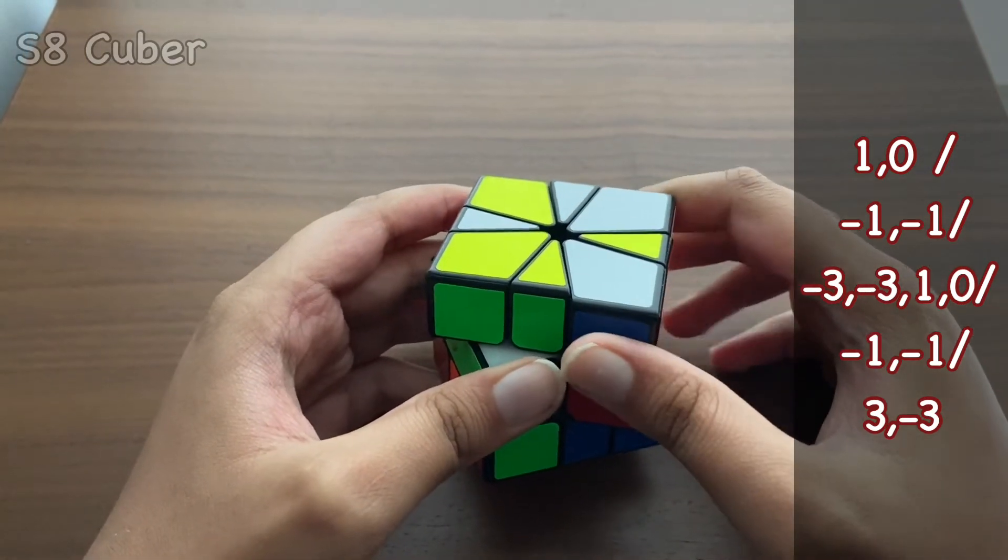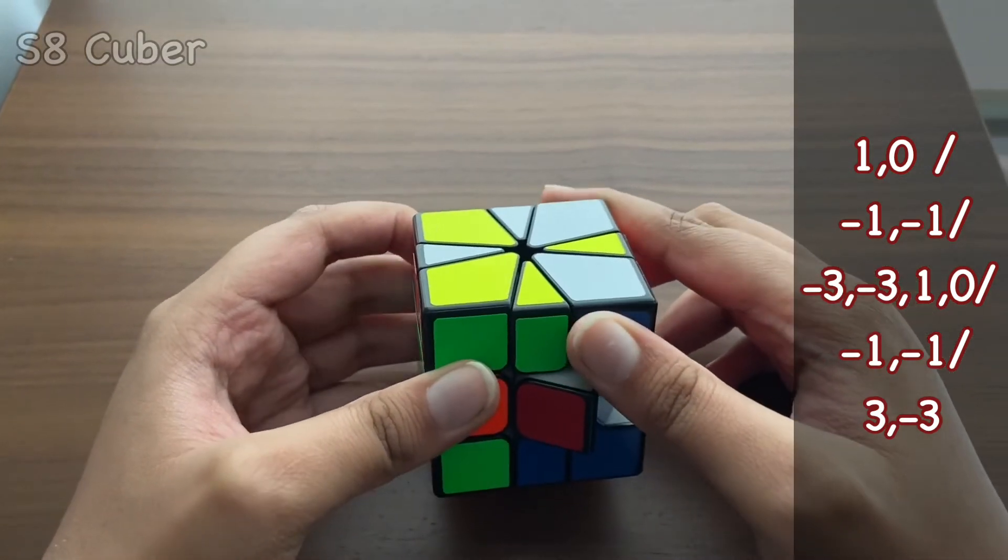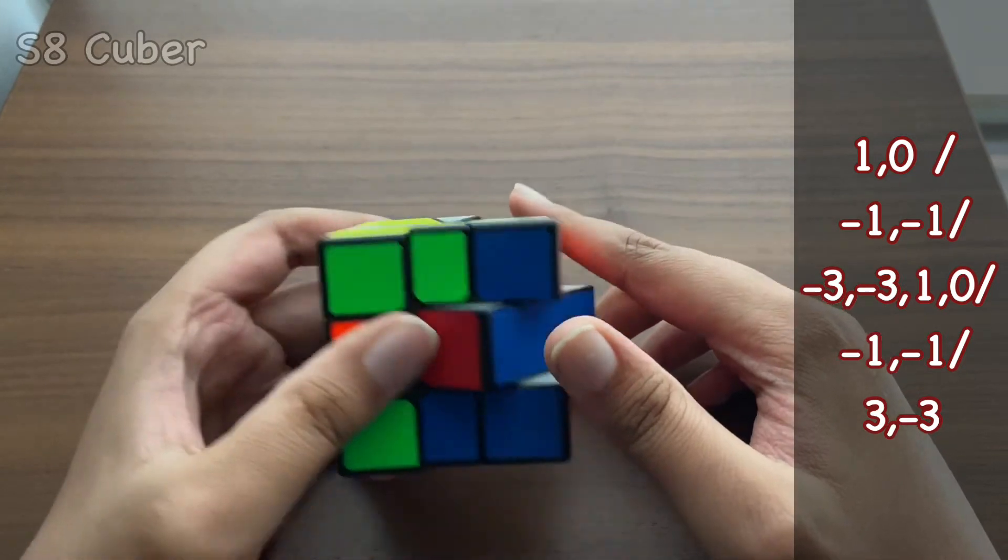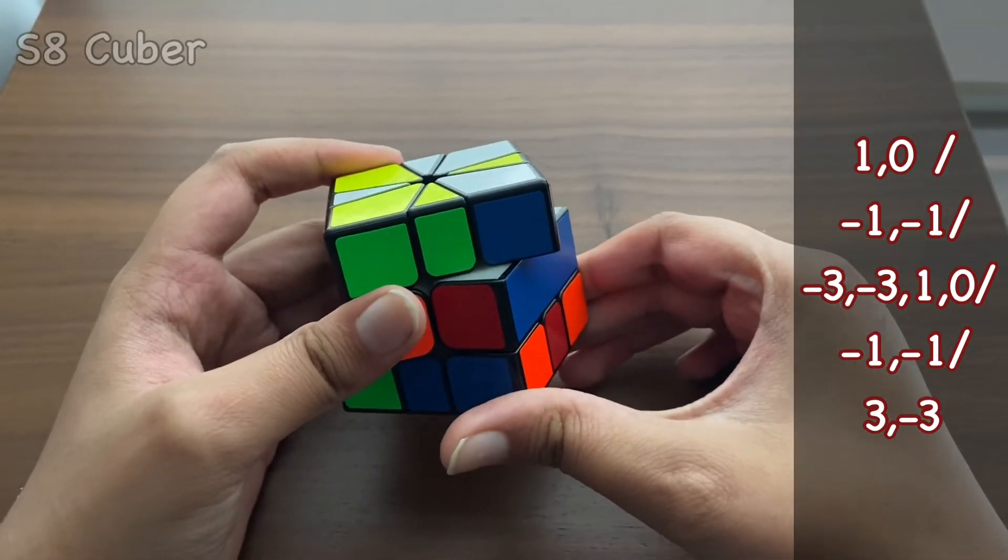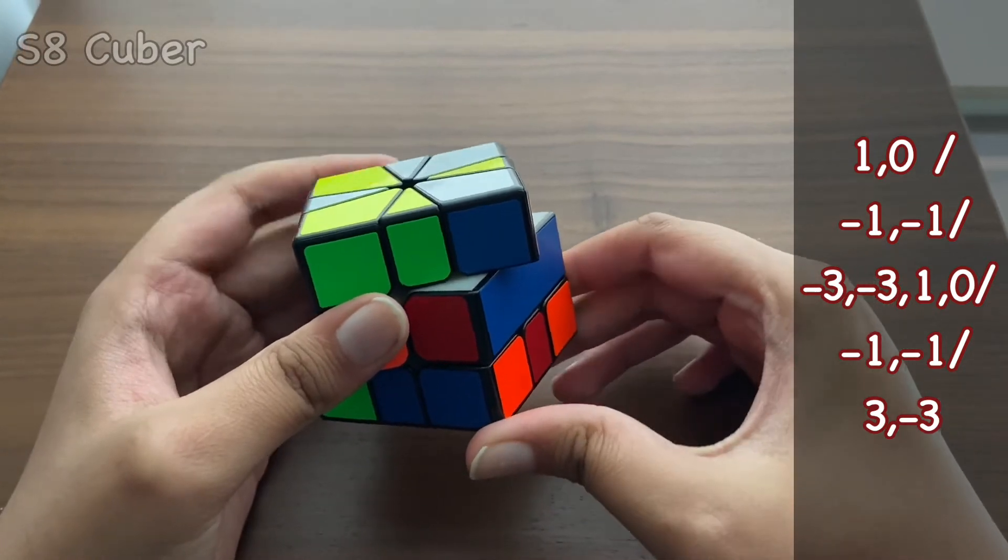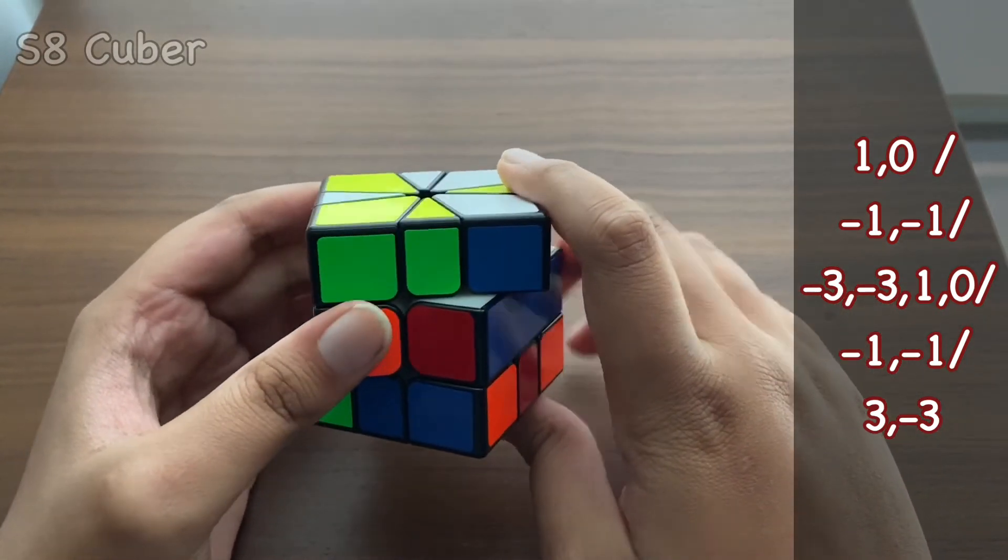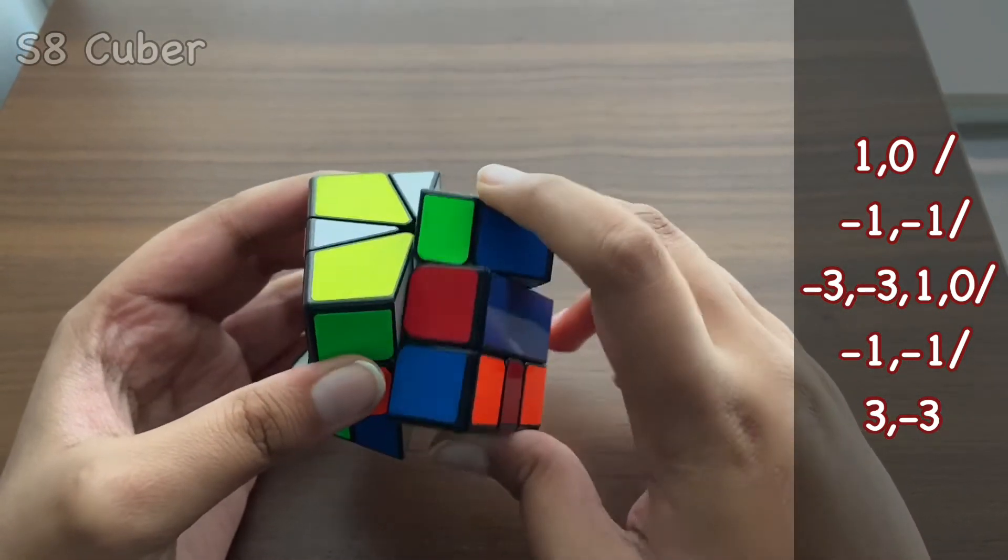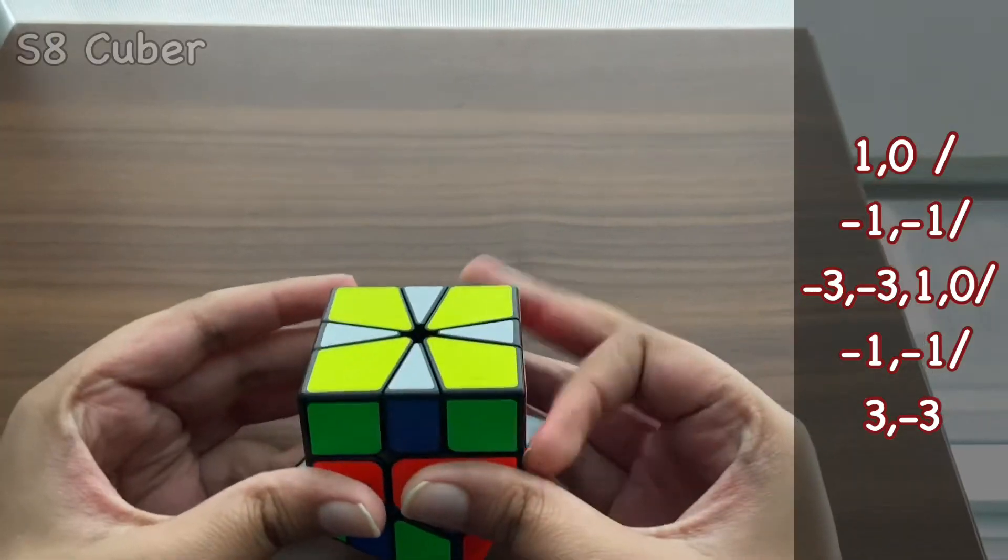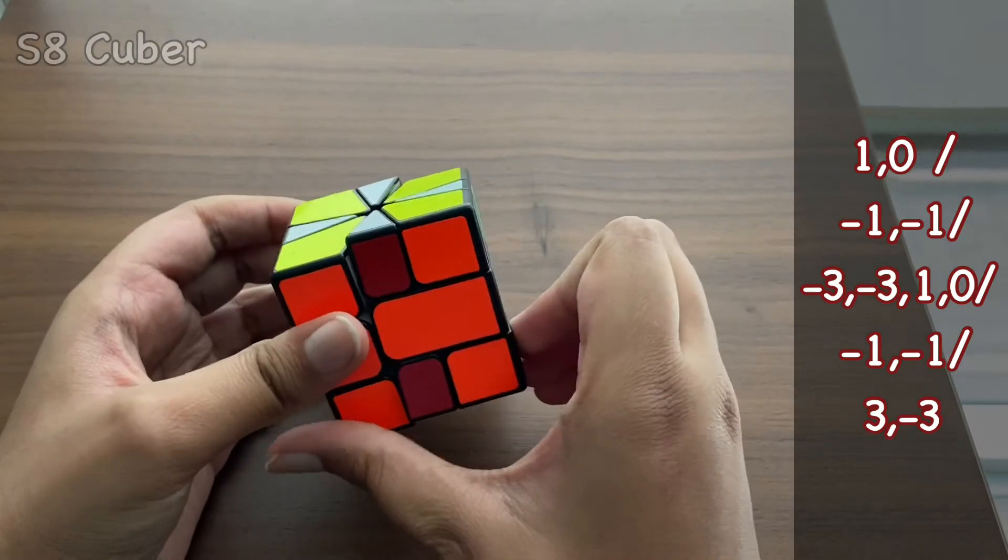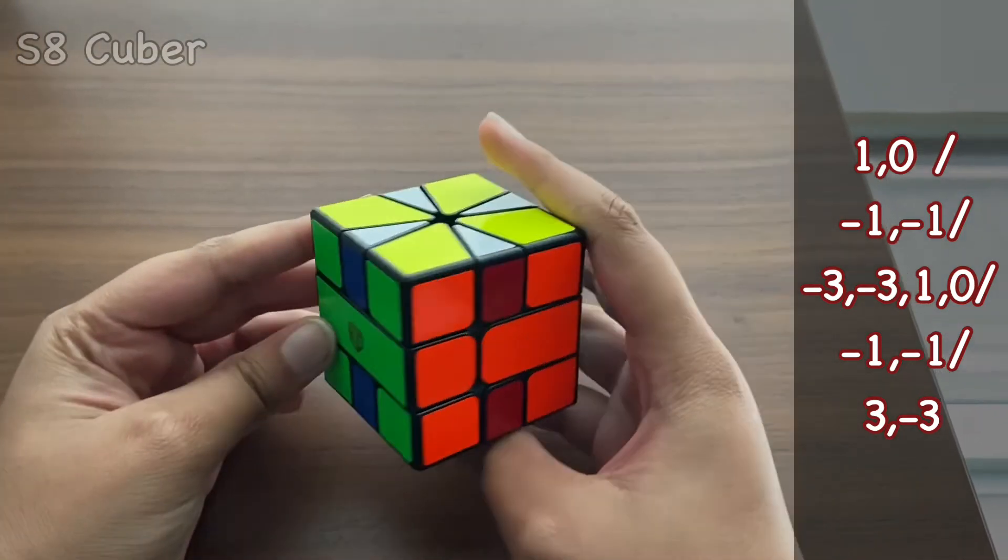So yeah, now we're going to be doing a minus one, which is like this. And also on the bottom layer, we're going to be doing a minus one, so like that, a minus one. Then we're going to be doing a slash. And then after that, we're going to be doing a 3 like this and a minus 3 like this.